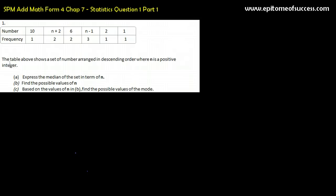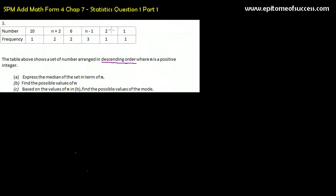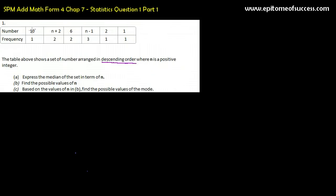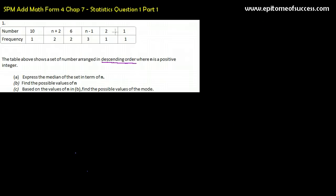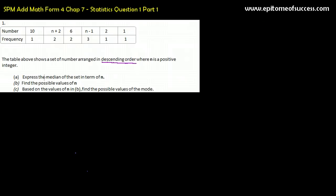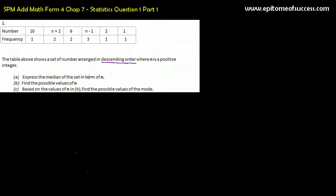Then let's look at the question. The table above shows a set of numbers arranged in descending order. So the keyword is here. It is arranged in descending order where n is a positive integer. It's a positive integer. Of course, it cannot be negative since it is between 10 and 1. It's arranged in descending order. Alright, then they say, express the median of the set in terms of n. Alright, median.